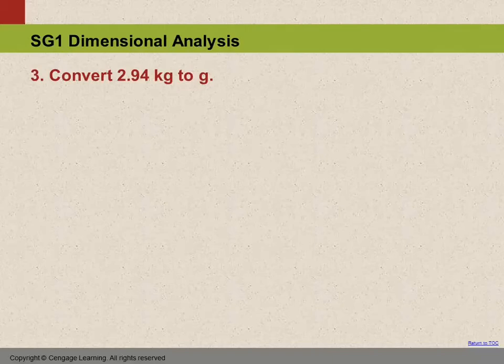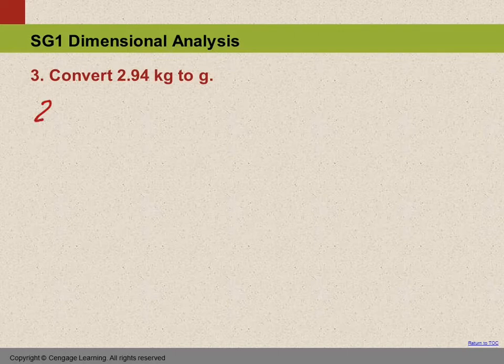Question number three: Convert 2.94 kilograms to grams. So we've got only one number here, 2.94 kilograms. The decimal point's not big enough, and they're asking us to convert to grams.